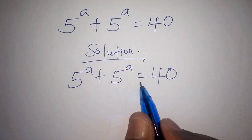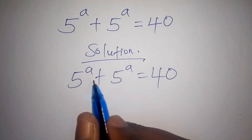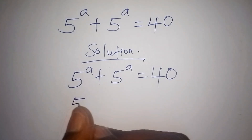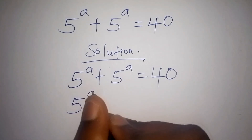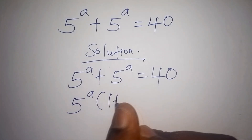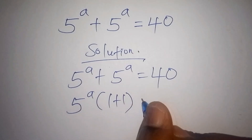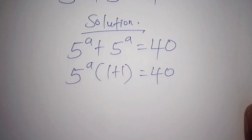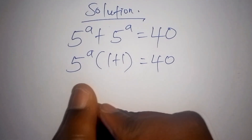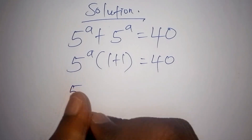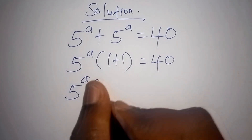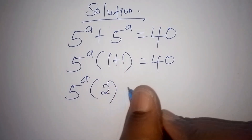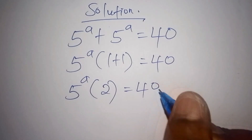The first thing is to factorize 5 to the power of A plus 5 to the power of A. This can be written as 5 to the power of A into bracket (1 plus 1) is equals to 40. Working out the number inside the bracket, we now have 5 to the power of A times 2 is equals to 40.